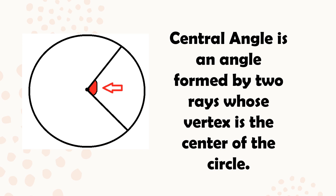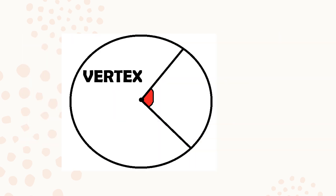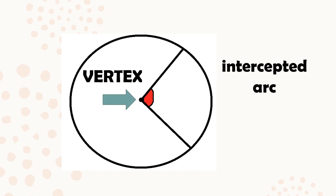A central angle is an angle formed by two rays — or two radii — whose vertex is on the center of the circle. The point where the two radii meet is the vertex, and it's located at the center of the circle. Opposite the vertex is your intercepted arc — that arc is what we call the intercepted arc, and it is opposite the vertex.